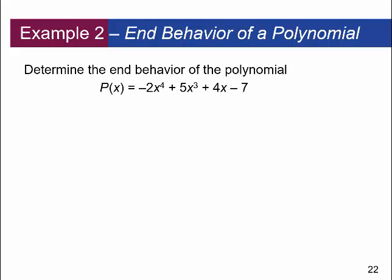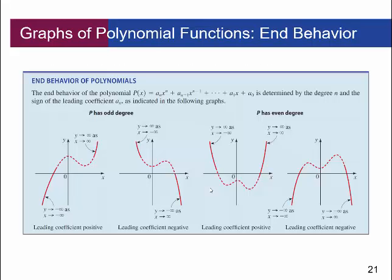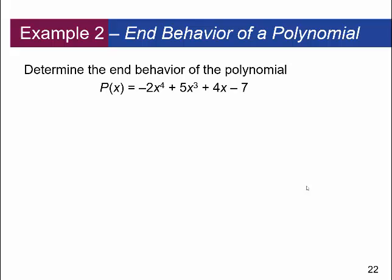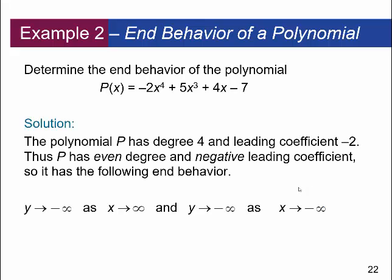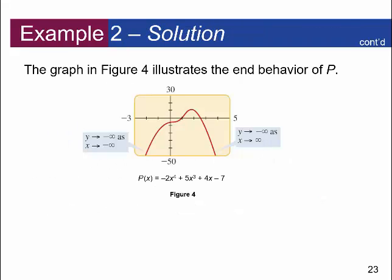Let's determine the end behavior of an example. The degree is 4 — even — and the leading coefficient is negative. Looking back at the table, for an even degree with a negative leading coefficient: y goes to negative infinity as x goes to infinity, and y goes to negative infinity as x goes to negative infinity. The polynomial is degree 4 with leading coefficient negative 2, so it has exactly that end behavior, and you can see it illustrated in the graph.